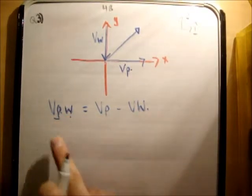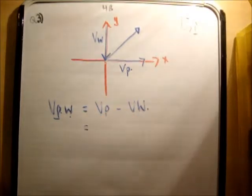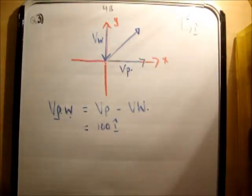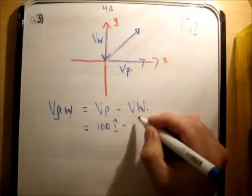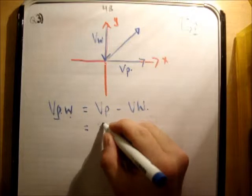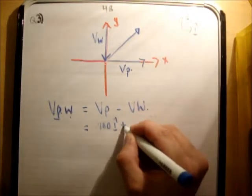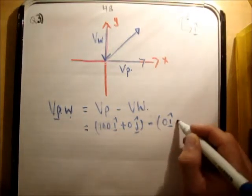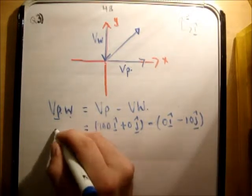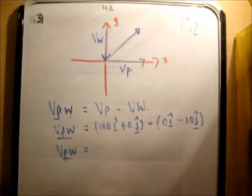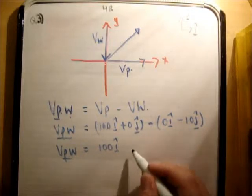So what do we know? So we know VP because we're given that, it is 100, and it's in the positive i hat unit vector direction. And we know VW because we're given that, and it's going in the negative j hat unit vector direction at 10, so it's minus 10 j hat. Like that. Or if you wanted to write it very explicitly, you'd say the following: you'd say 100 i hat plus 0 j hat minus 0 i hat minus 10 j hat. So VPW is equal to 100 i hat plus 10 j hat.